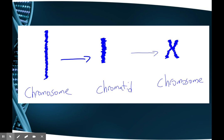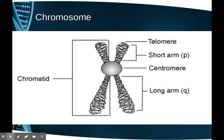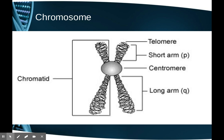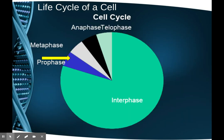The X-shaped chromosomes have two short arms and two long arms, so the X isn't exactly symmetrical. Each half of the X-shaped chromosome is called a chromatid, and two chromatids joined at a centromere make a chromosome.